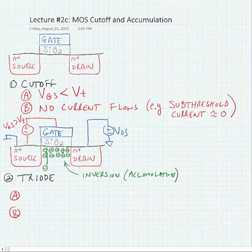we're assuming that our source here is grounded just for ease of calculation. So we put a VDS that's greater than zero. We're going to create a lateral electric field